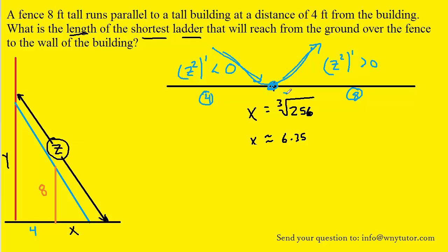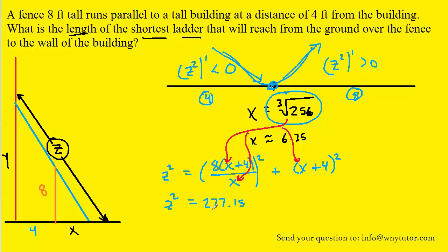So what we do to find the actual minimum value of z squared is we plug this into the z squared function. Let's put that back up. So go ahead and use your calculator to plug the cube root of 256 in for each x value. And when you do that, you get roughly 277.15.